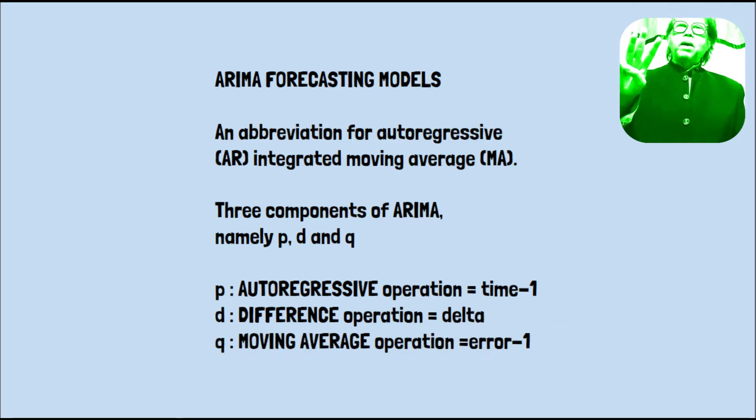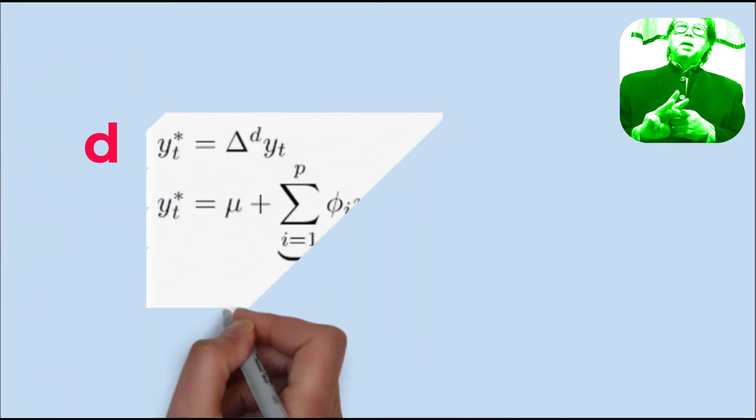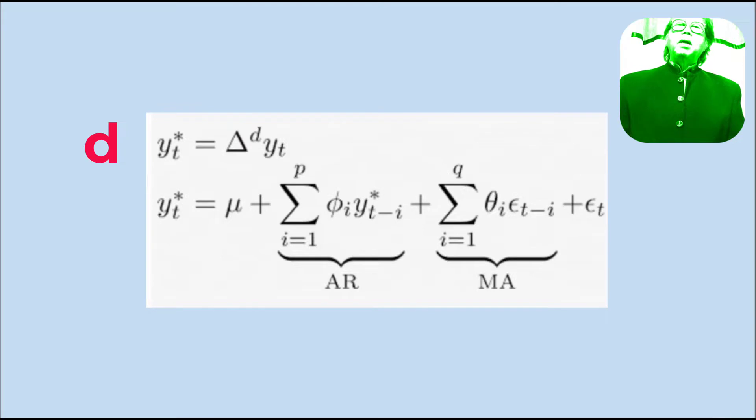There are three components of ARIMA, namely P, D, and Q. Let us discuss this one by one to complete your assignment one.